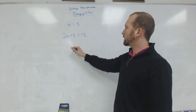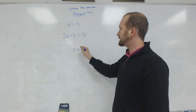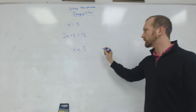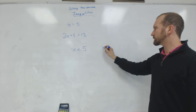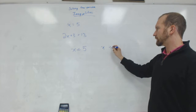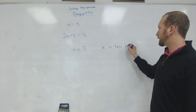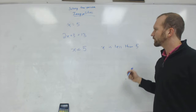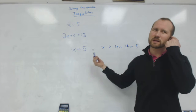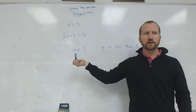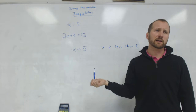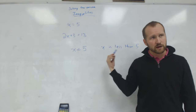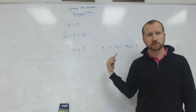A good example would be X is less than 5. What does this mean? It means our variable, instead of just having one value, has a range of possible values.